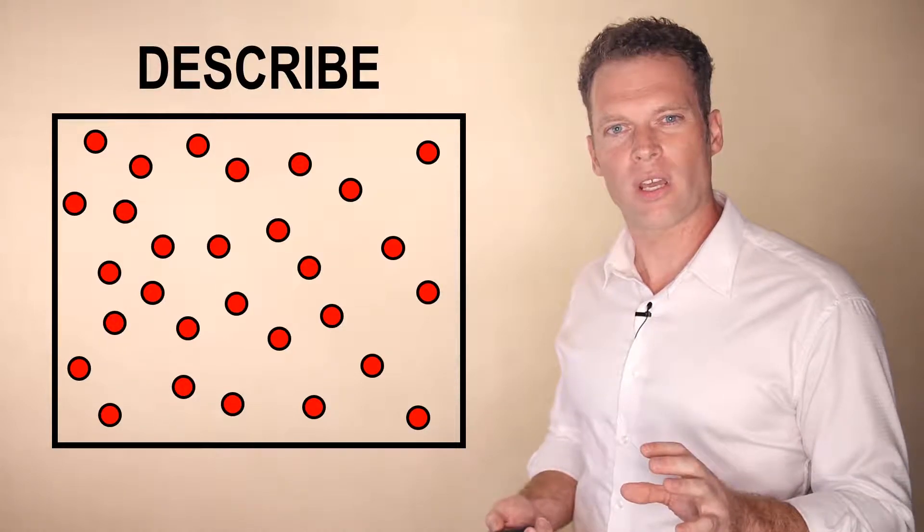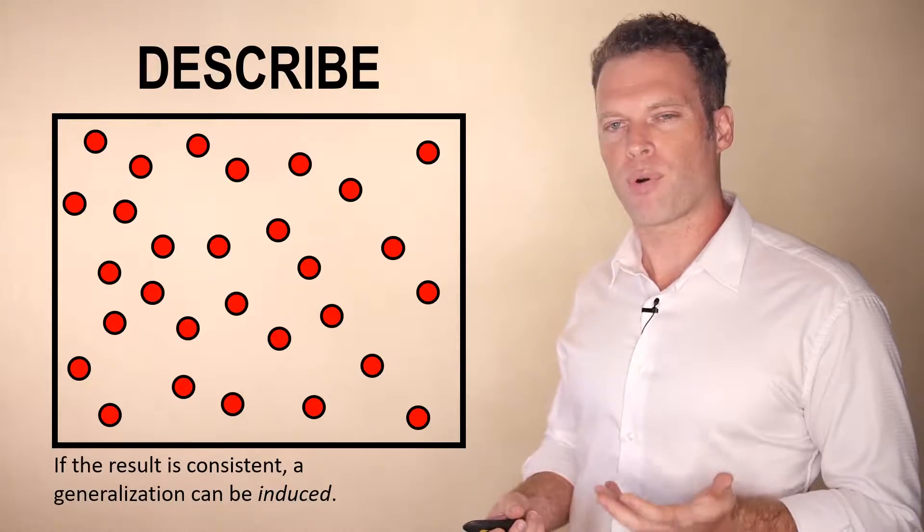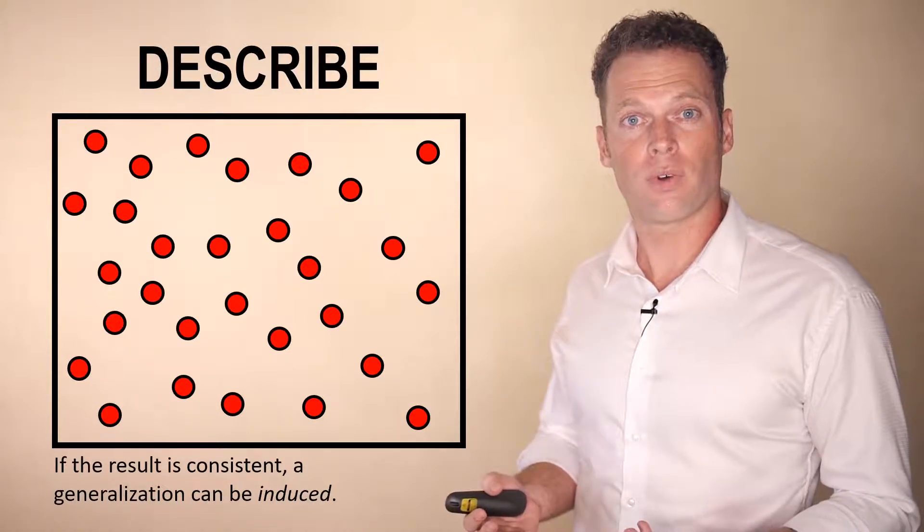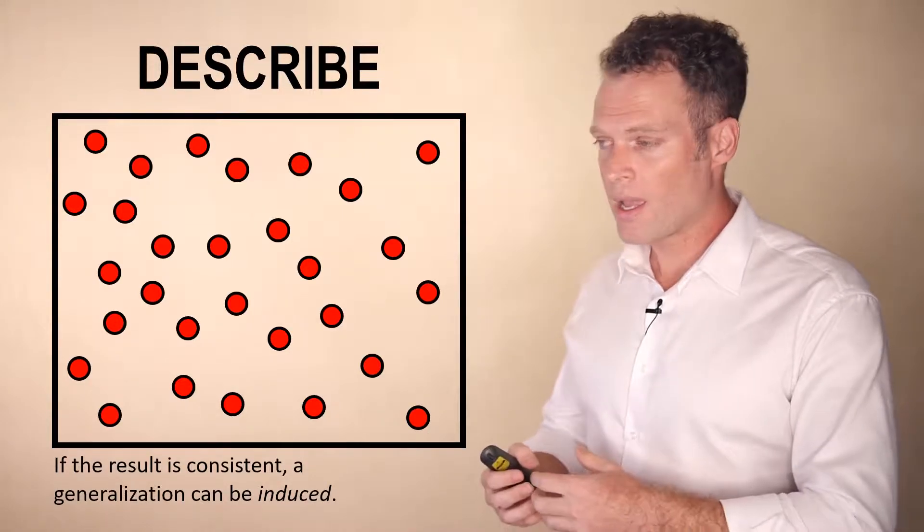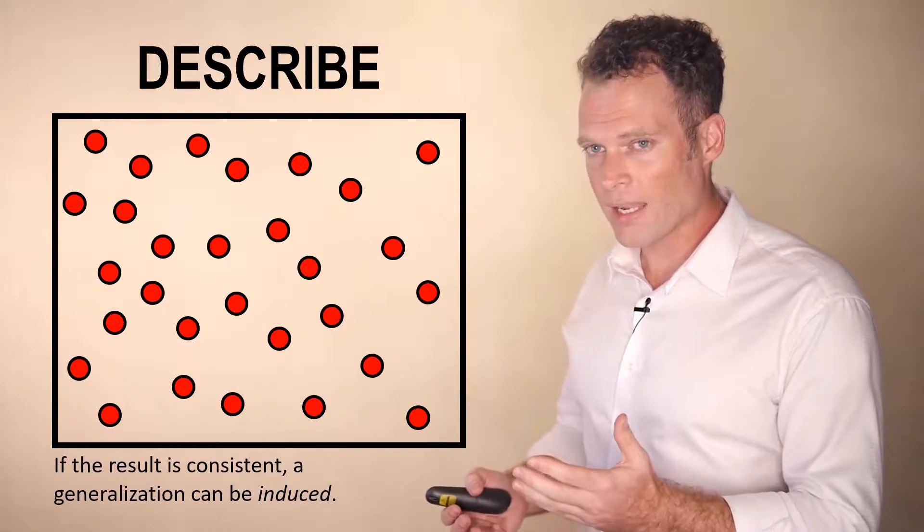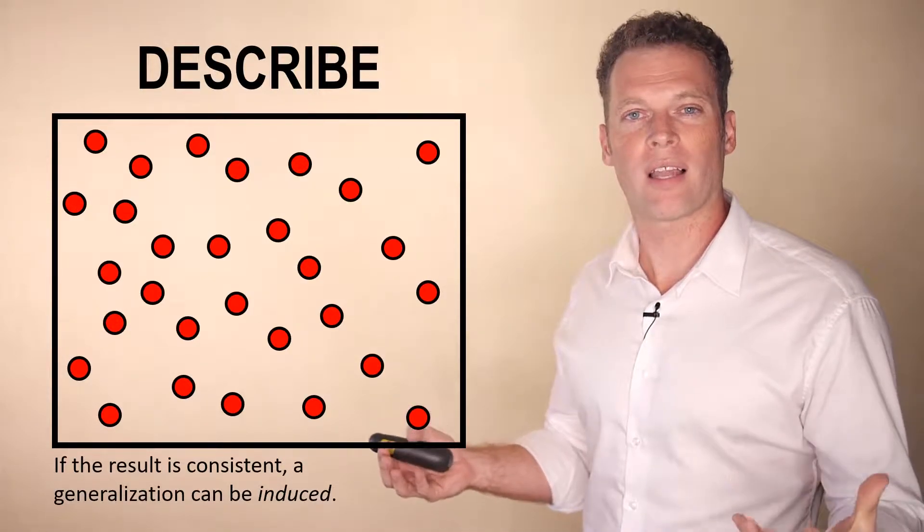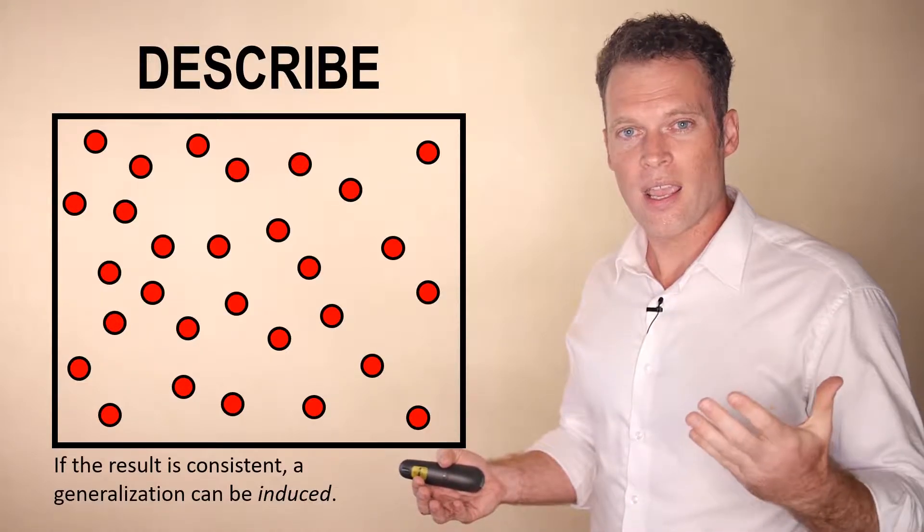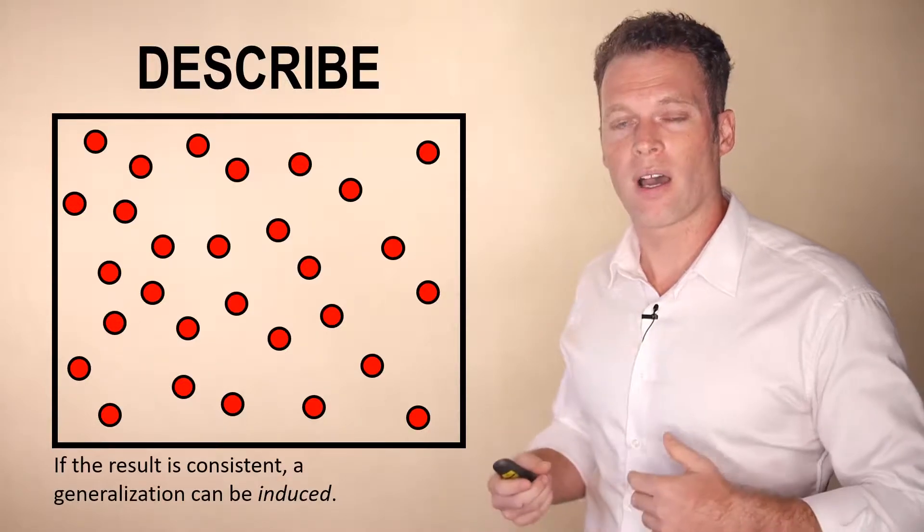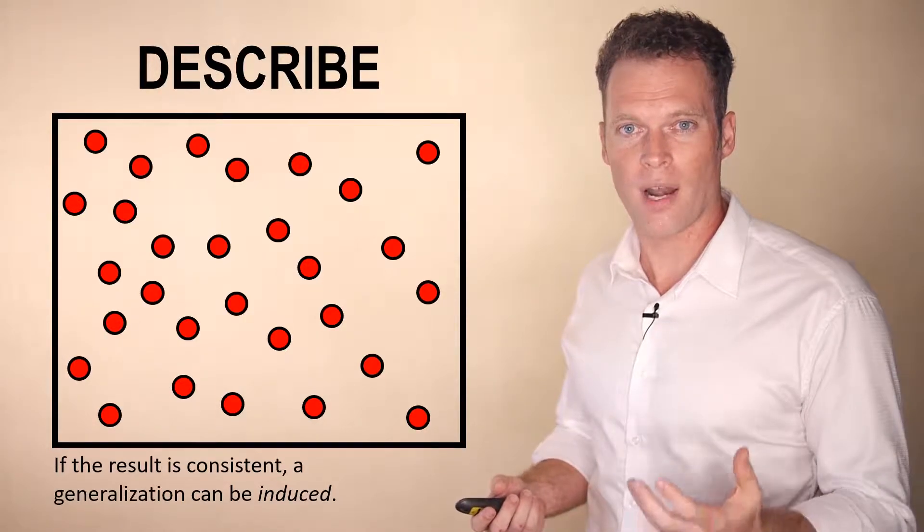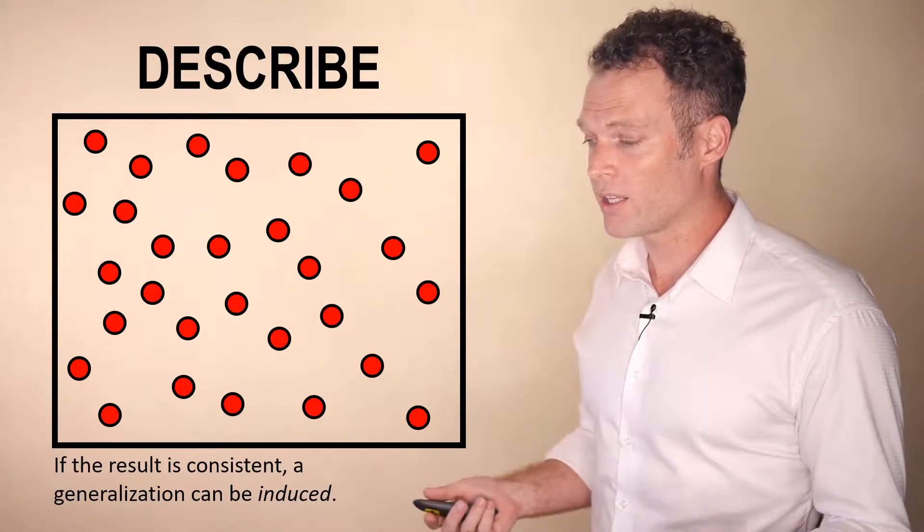And after a short while, we could generalize saying that this is probably a behavior of all gases when they expand into a vacuum. And so generalizing from specific observations to a broad class of a phenomenon involves what's called inductive logic. And this is an important part of describing scientific phenomena, understanding how phenomena behave more generally.